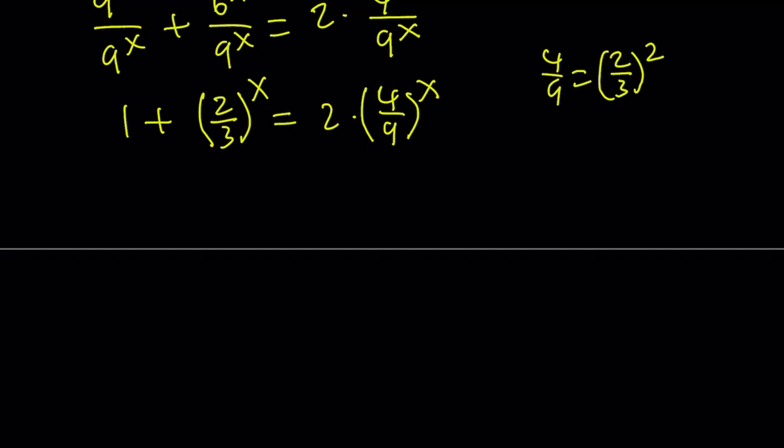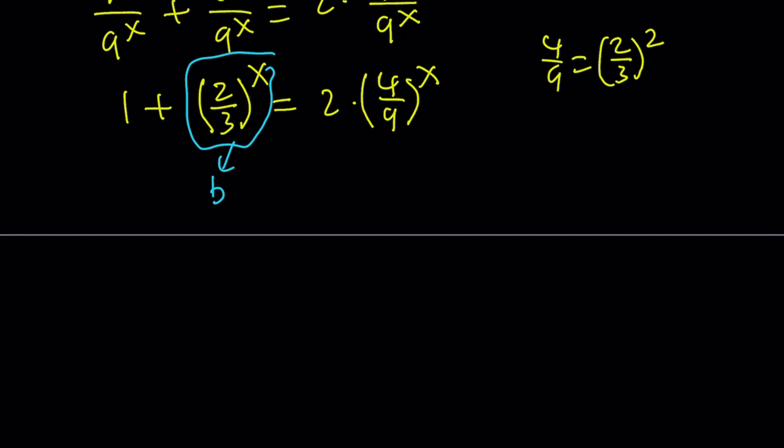Now, we're going to use substitution. Shouldn't be a surprise, right? We're going to call this something. What should we call it? How about b? Let's call it b. Last time I think we called it c. And this time we're going to call it b. And this is going to give us the following. If that's b, then this should be b squared. So we get 1 plus b equals 2b squared.